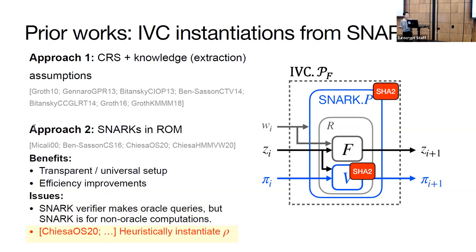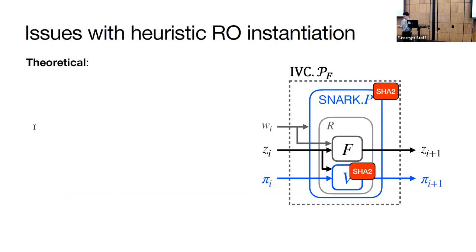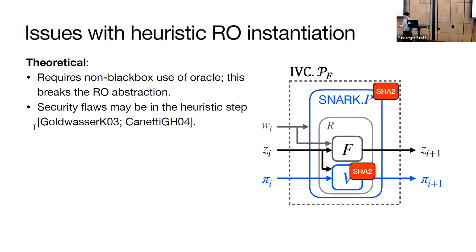In prior work by Kothapalli, Srinivasan, and Spooner, they get around this issue by heuristically instantiating the random oracle. They use a concrete hash function, such as SHA2, and in the picture I have this as the red boxes. In other words, any time the verifier makes a random oracle call, it actually just runs the SHA2 circuit. We're intentionally breaking the random oracle abstraction by instantiating the oracle. This means you don't actually get end-to-end security in any particular model. There may be hidden security flaws when we apply the heuristic step.